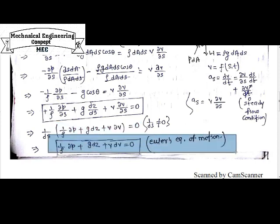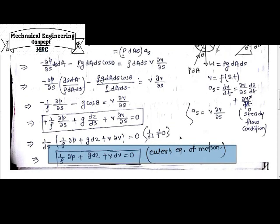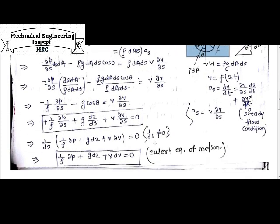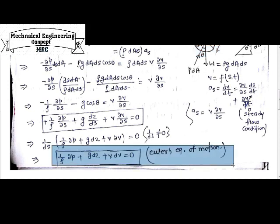This resultant equation will be known as Euler equation of motion for dynamics condition, for elementary fluid element which has a volume dS and dA. So this will be the Euler equation of motion, which is helpful to derive Bernoulli's equation of motion for ideal fluid as well as real fluid.